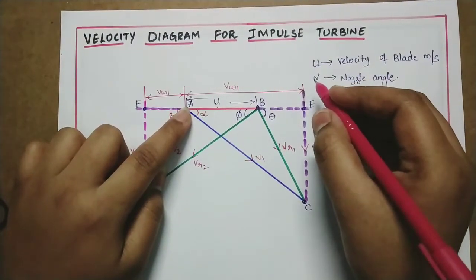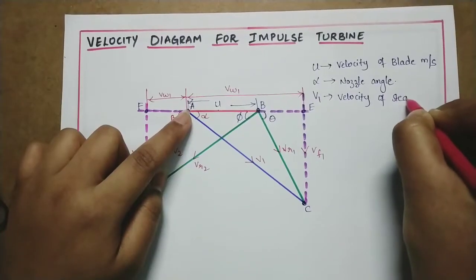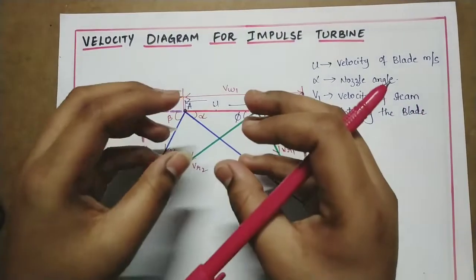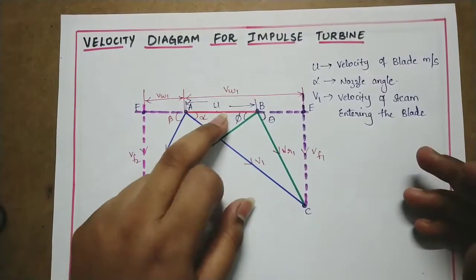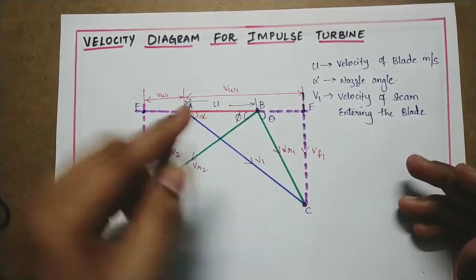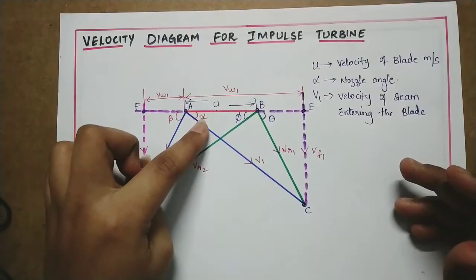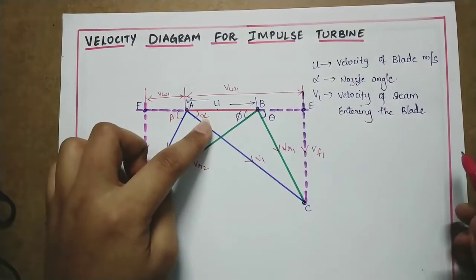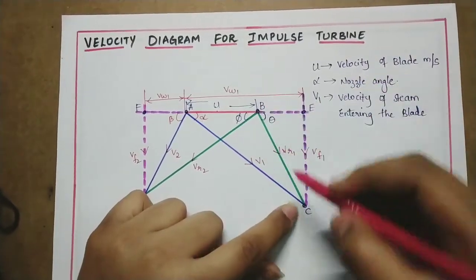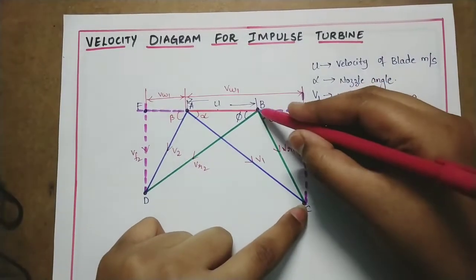So you have initial velocity, velocity of the blade, and nozzle angle. First draw the AB line, then at angle alpha draw V1. V1 is the velocity of the steam from the nozzle, the velocity of steam entering the blade.